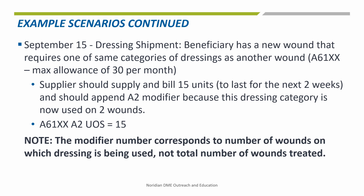You then get notification that the beneficiary has a new wound that requires one of the same dressings as one of the previous two wounds. The supplier would then supply and bill the additional 15 units with the A2 modifier, as the beneficiary now has two wounds that require the same dressing. The modifier corresponds to the number of wounds that the dressing is being applied on, not the total number of wounds treated.